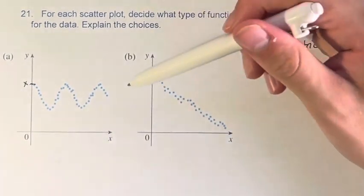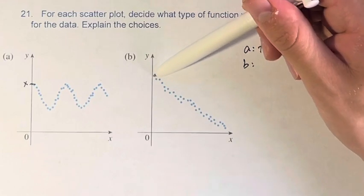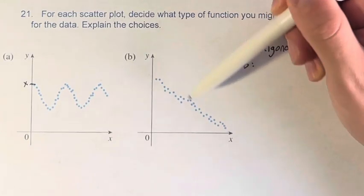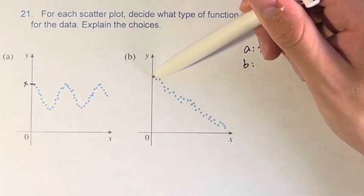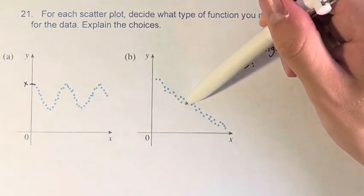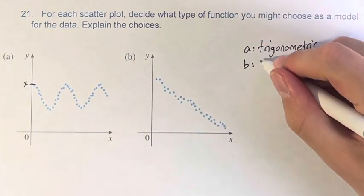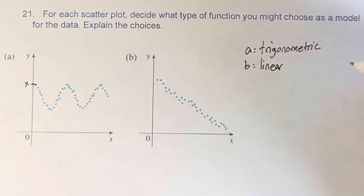And then B, we can see that the rate of change is constant. There's a little bit of variability in the data, obviously, but overall the rate of change of y as we increase in x stays the same. Therefore, we would expect to use a linear model for the data.